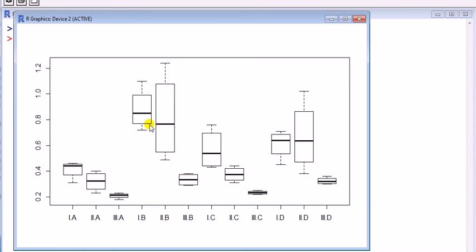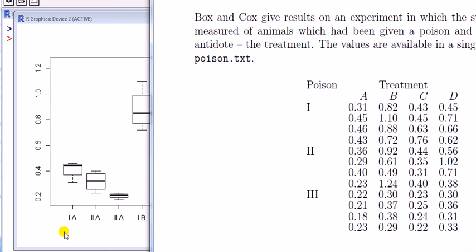Notice there are, if you count them, 12 box plots, because there are 12 combinations. So here we go: 1A, that is poison 1 treatment A, and that's the box plot for that. Treatment A for poison 2, and so on.